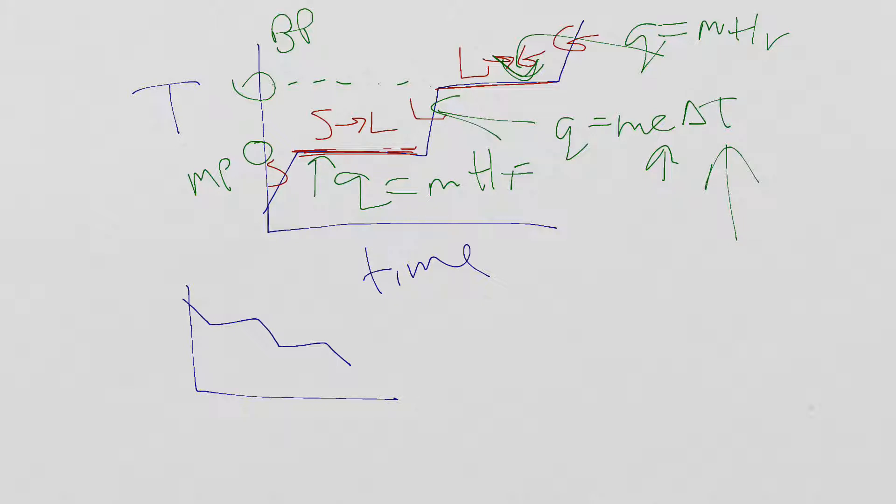Notice there's no delta Ts, and that is because the temperature at which something is melting or boiling remains constant. So you're not going to put a temperature into either q equals m H f or q equals m H v.